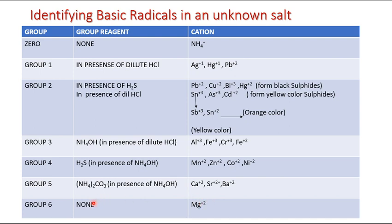We don't have a group reagent in the case of Group 6, nor in the case of Group 0, because in both cases we have only one ion.